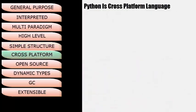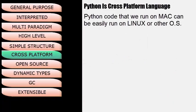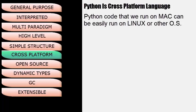The next feature is that Python is a Cross-Platform language. This means Python code that runs on a Macintosh computer will run easily on Linux or any other platform, and even on Windows. The only prerequisite is that the Python interpreter must be pre-installed on Windows, while for other operating systems it comes pre-installed.